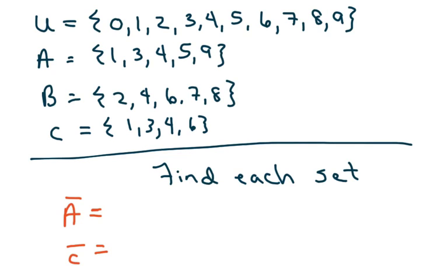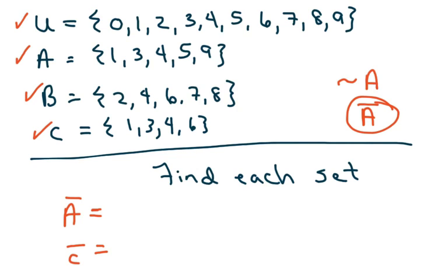Hi everyone, we're going to do more difficult problems with sets and counting that involve complements of a set. I suggest you write these sets down — we have the universal set and then we have sets A, B, and C. The complement of a set can be written with tilde A or bar A. I use bar A because that's what we do in our class with our book.